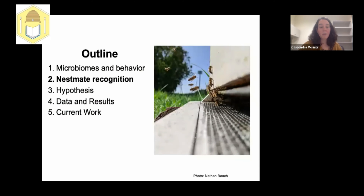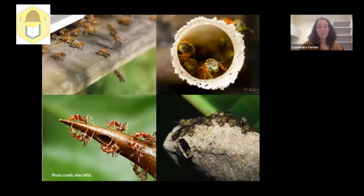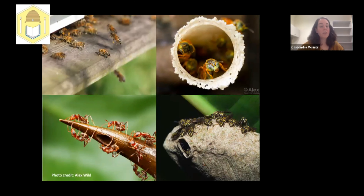Nest mate recognition is a trait that has evolved across eusocial insects as a way to protect stored food, brood, and other colony resources. It occurs at the entrance to the colony, where guarding individuals use cues on incoming individuals to determine if they are a nest mate or an intruder.